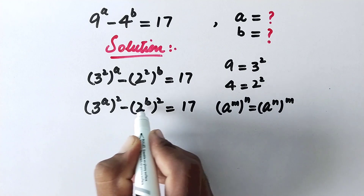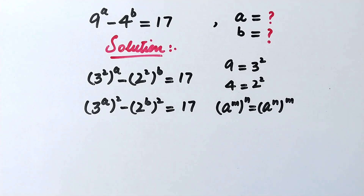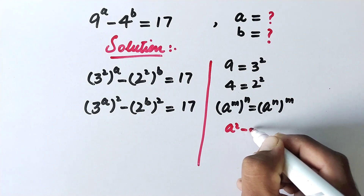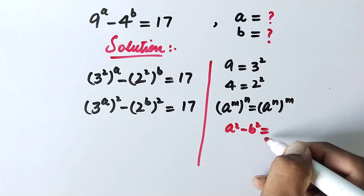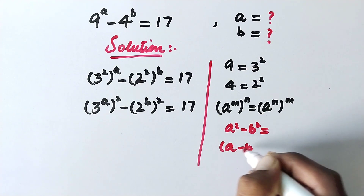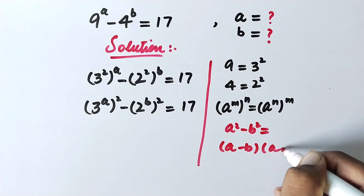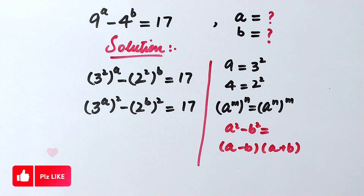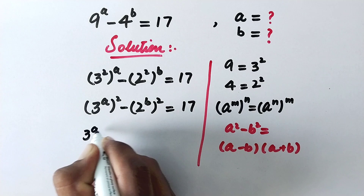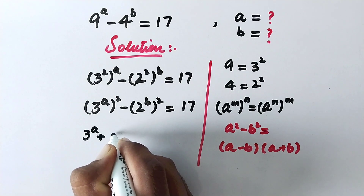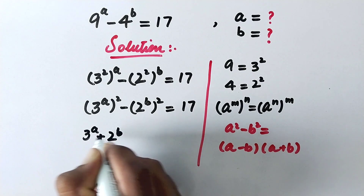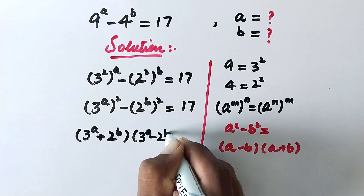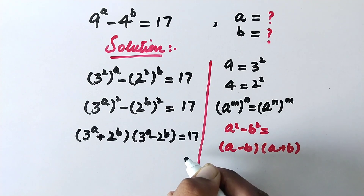Now we can apply an algebraic formula: a squared minus b squared is equal to (a minus b) times (a plus b). So here we will write (3 to the power a plus 2 to the power b) times (3 to the power a minus 2 to the power b) is equal to 17.